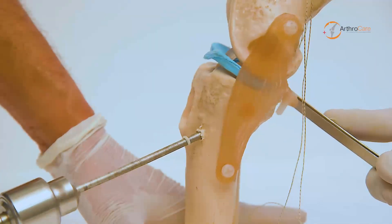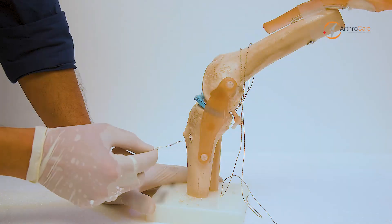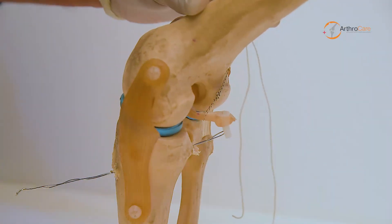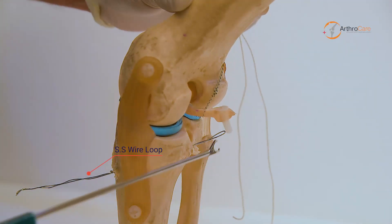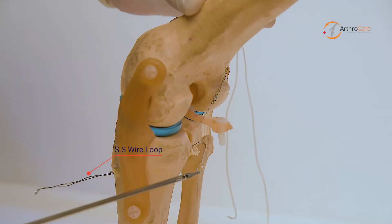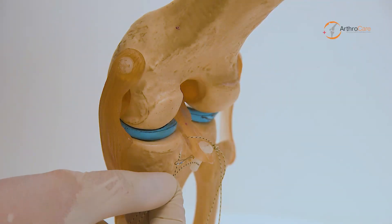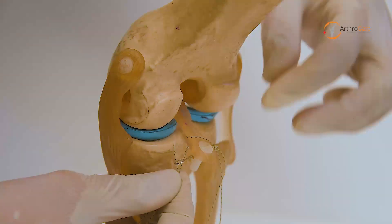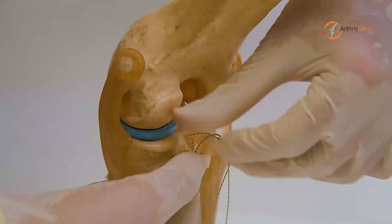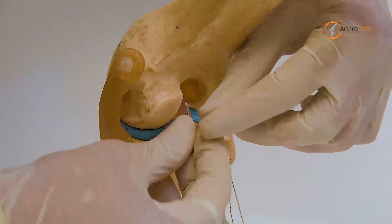In live surgery, the tip should be guarded. Everything is removed and a stainless steel wire loop is introduced. It is pulled into the posteromedial portal, and both ends of the fiber wire are pulled through the tibial tunnel anteriorly.